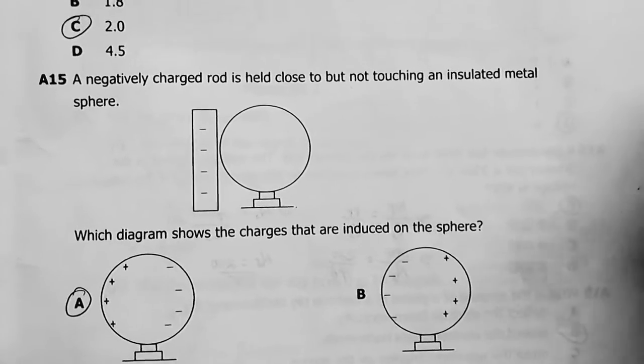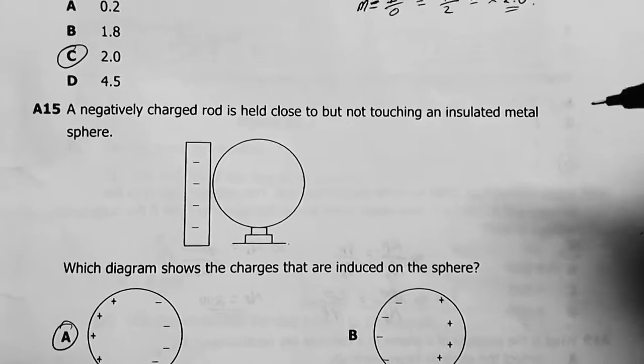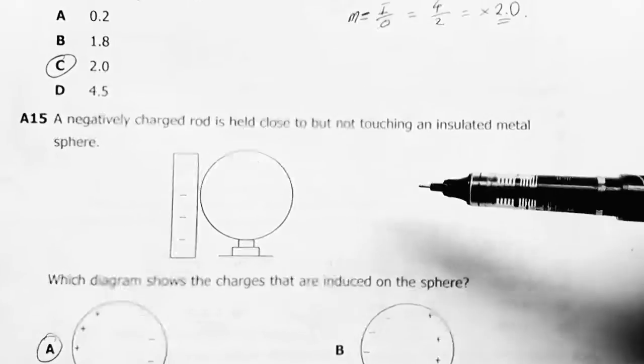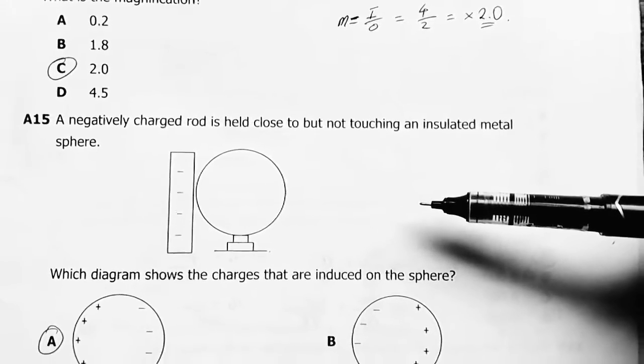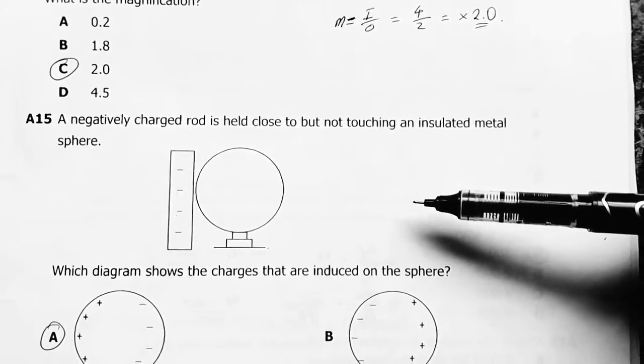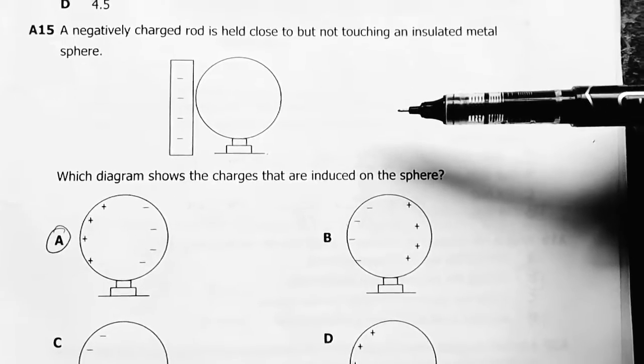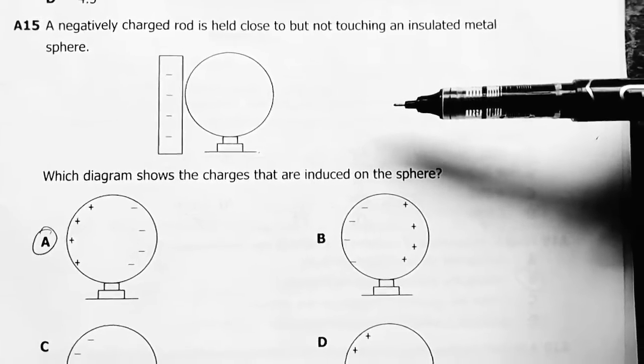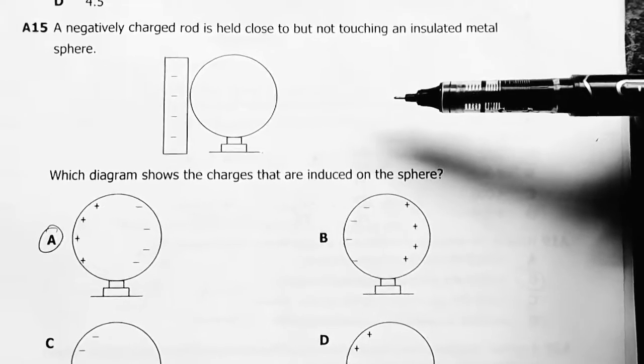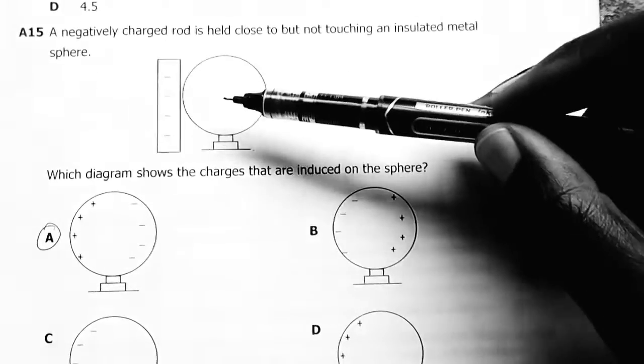Question 15: A negatively charged rod is held close but not touching an insulated material. Which diagram shows the charges that are induced in the sphere?